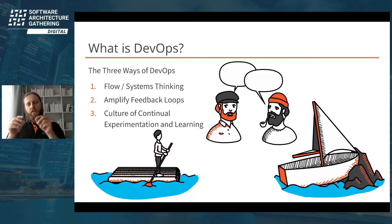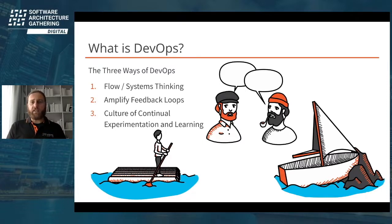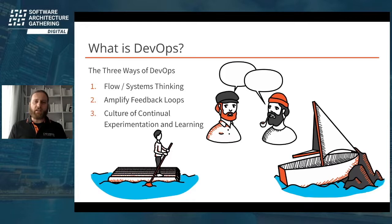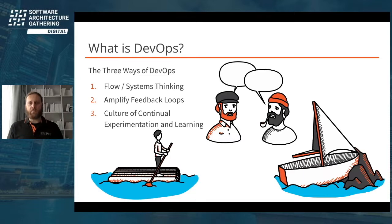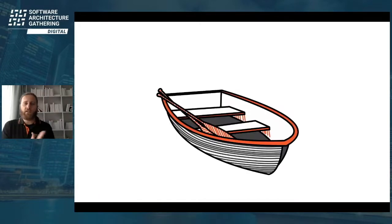I would like to step away from the Three Ways for a bit because I would like to talk about the Five Ideals. The Five Ideals are something that Gene Kim described in his latest book, The Unicorn Project. I will try to illustrate the points with a story — for most of them I have a concrete example — and then talk about what that means for architecture and DevOps.